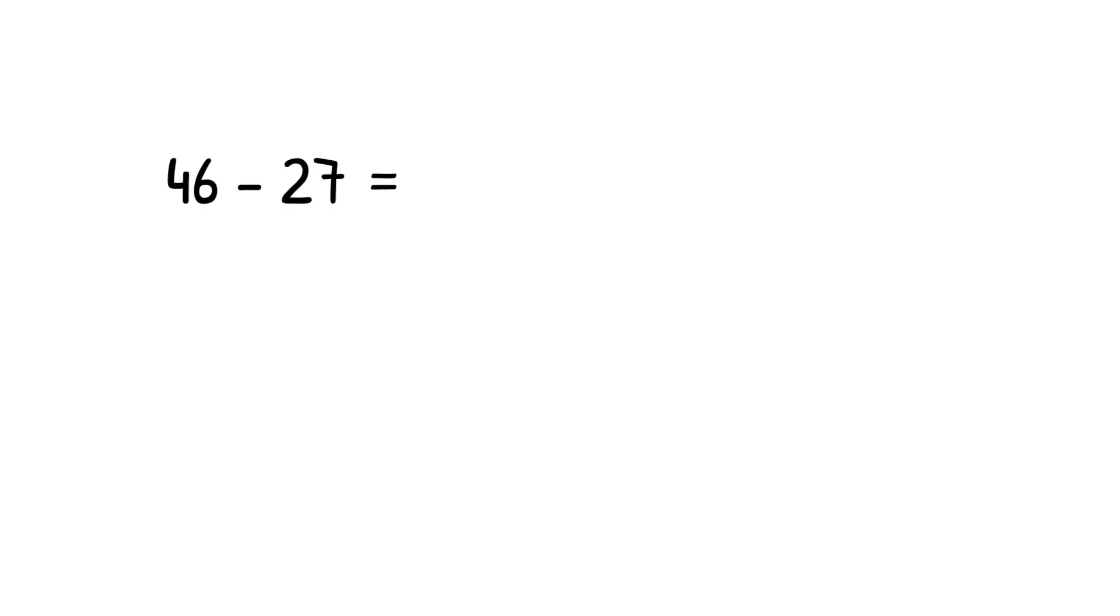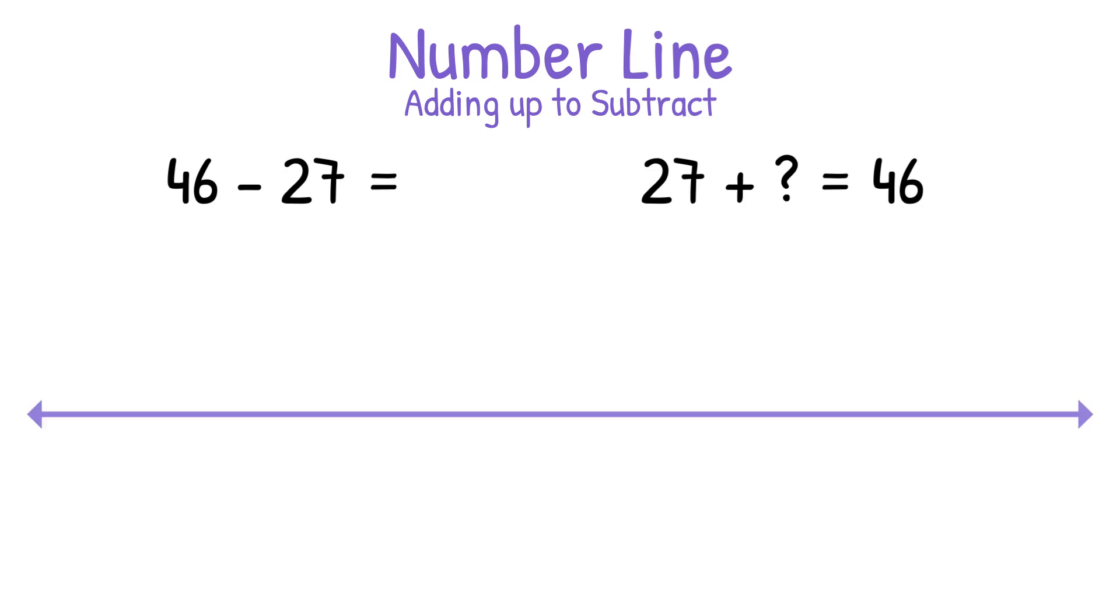Last, we're going to solve the same exact equation using the number line, but adding up to subtract. If you know what a fact family is, you know that 46 minus 27 equals question mark can also be written as an addition equation, which is 27 plus question mark equals 46. To solve this related addition equation, we draw our open number line and start on the left side, the beginning of the number line, since we'll be adding up. We will start at the number 27. We don't know how much we have to add, but we do know that we want to get to the number 46.